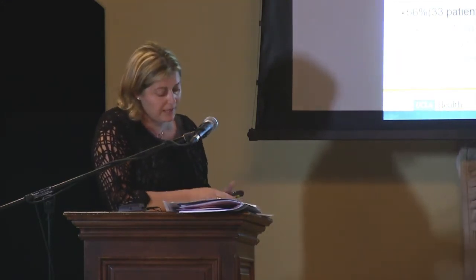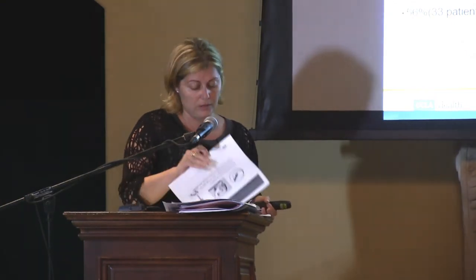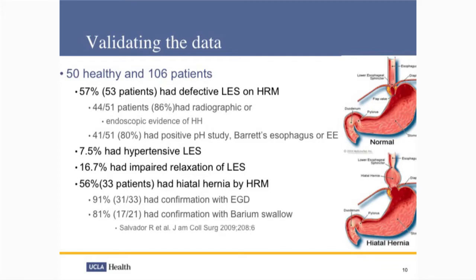We do have a set of normal values that have been published and validated — and that's new. The data has been validated using both endoscopy and barium swallow. A study in the Journal of the American College of Surgery took 50 healthy patients and 106 patients with symptoms, looking for defective lower esophageal sphincter on high-resolution manometry. They were able to confirm that 86% of patients did have hiatal hernia if there was a defective lower esophageal sphincter. Almost 91% had confirmation on endoscopy and 81% with barium swallow — nothing is 100%, but those are really significant numbers.